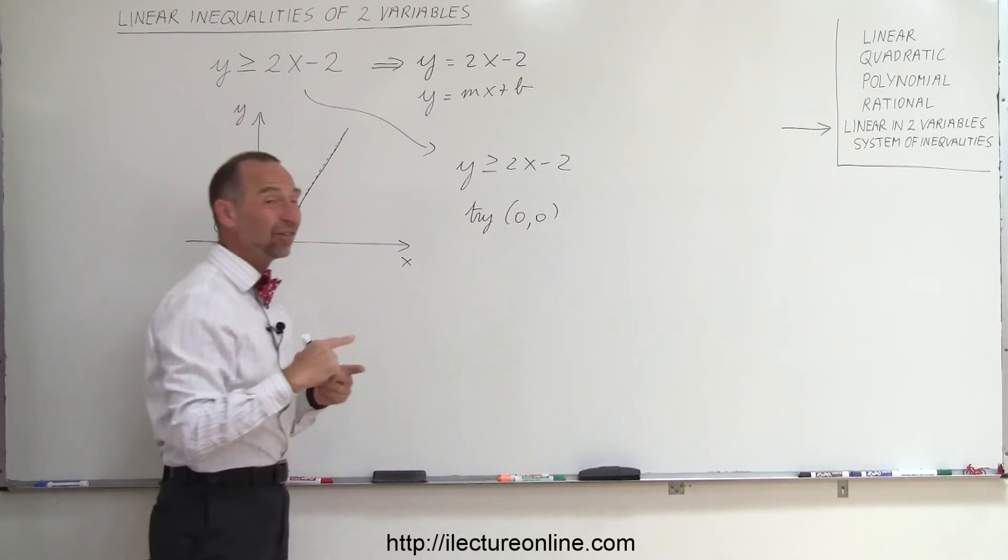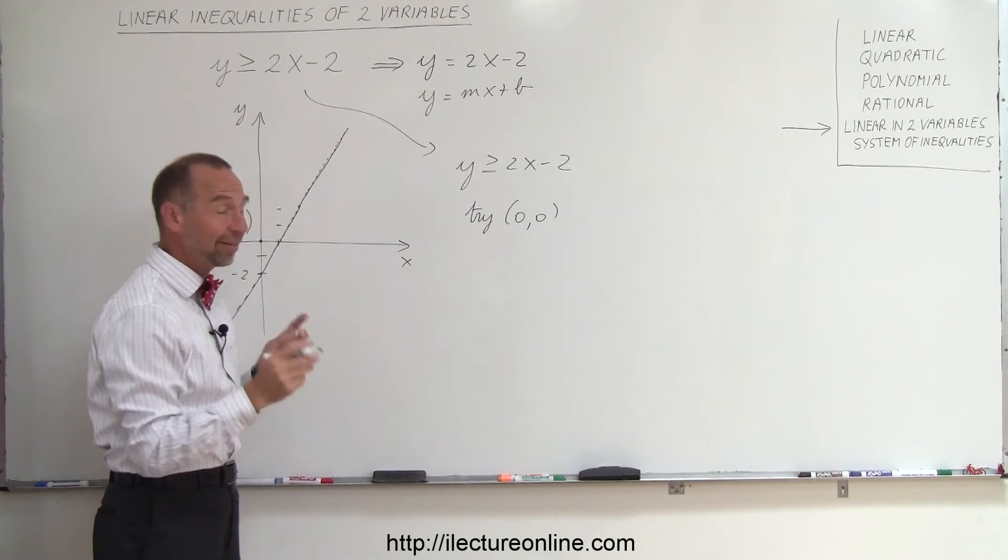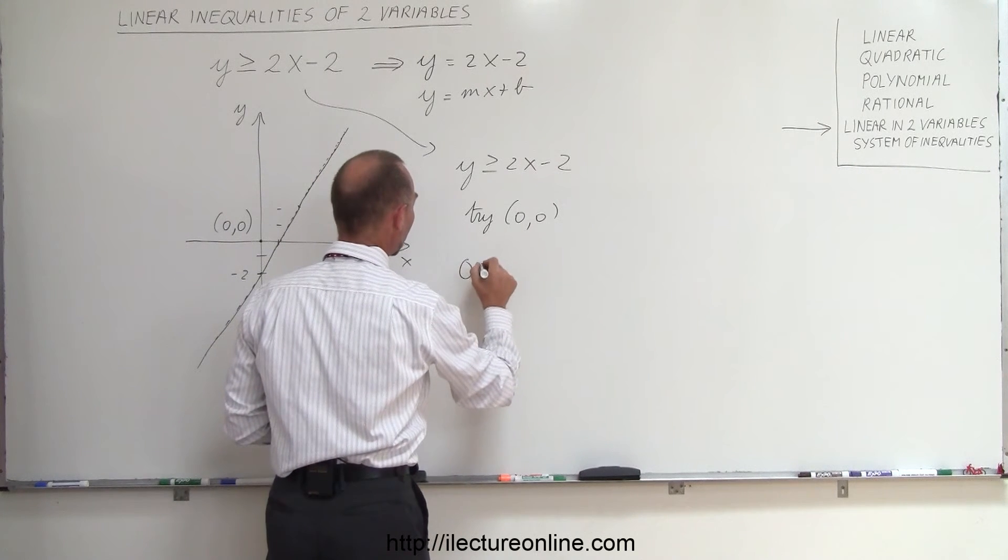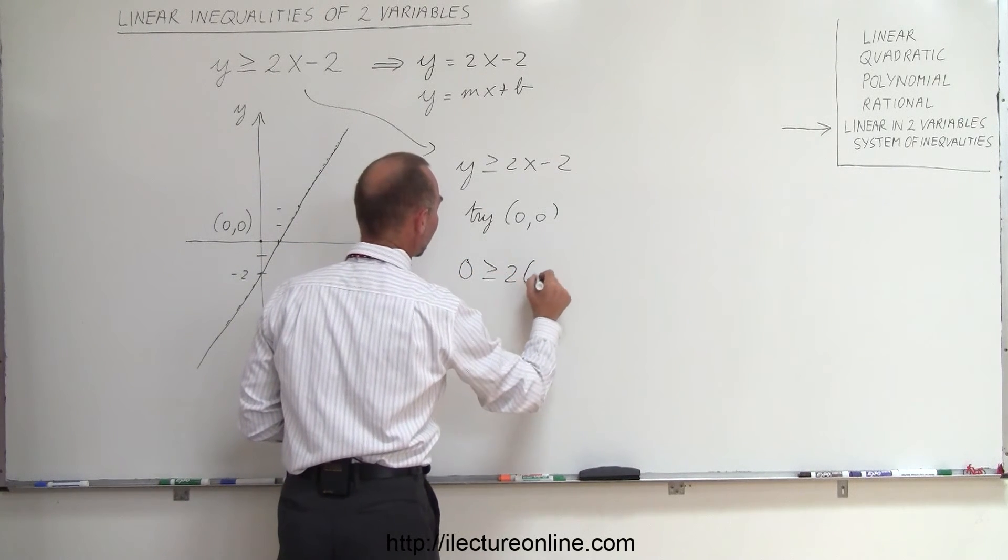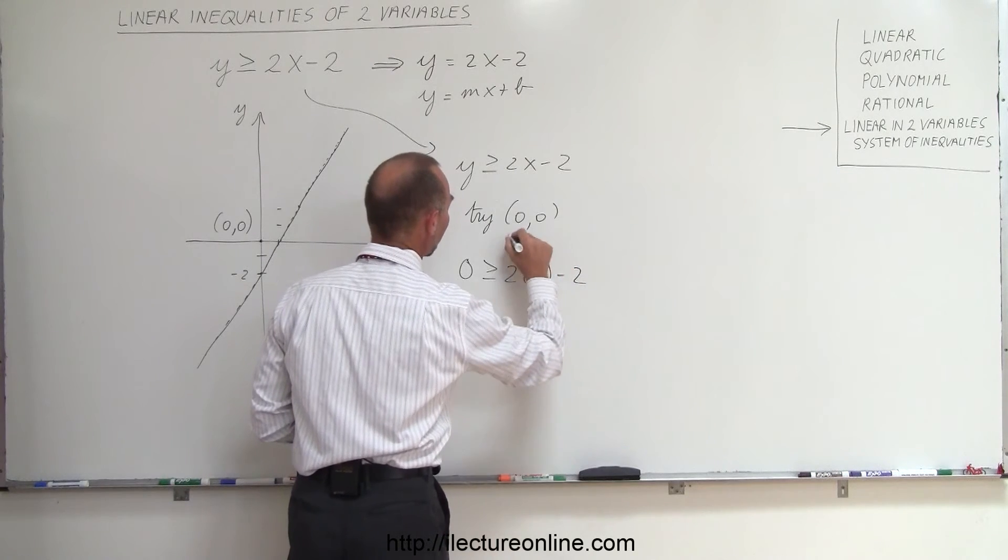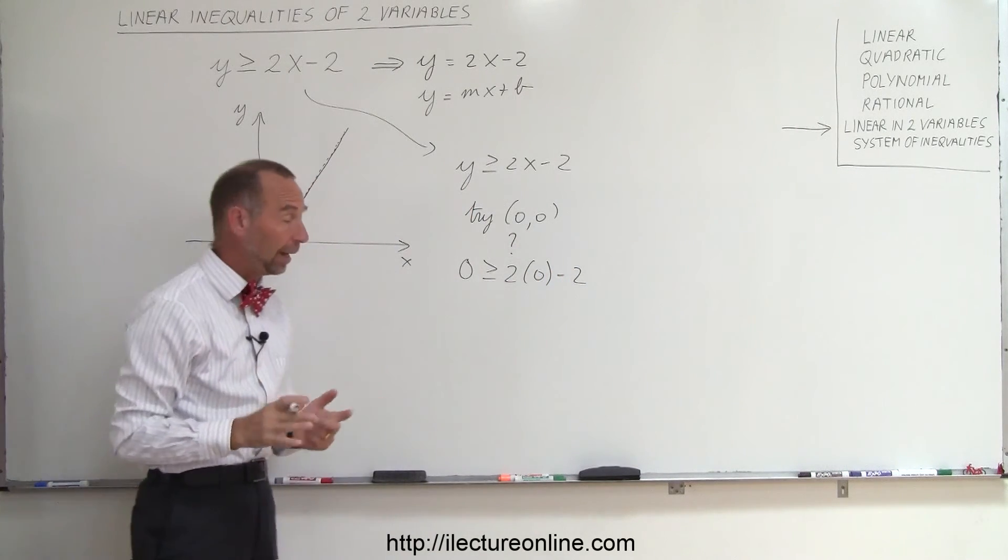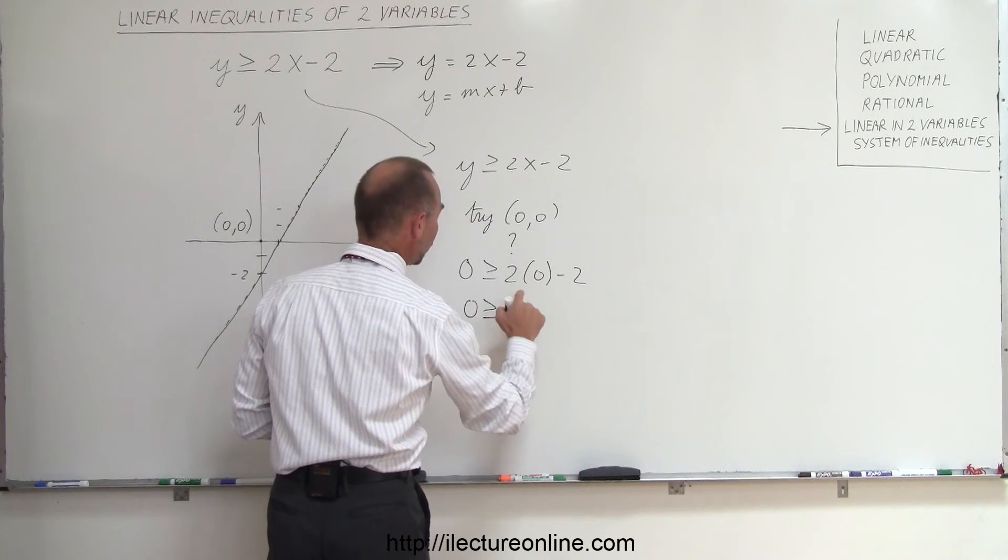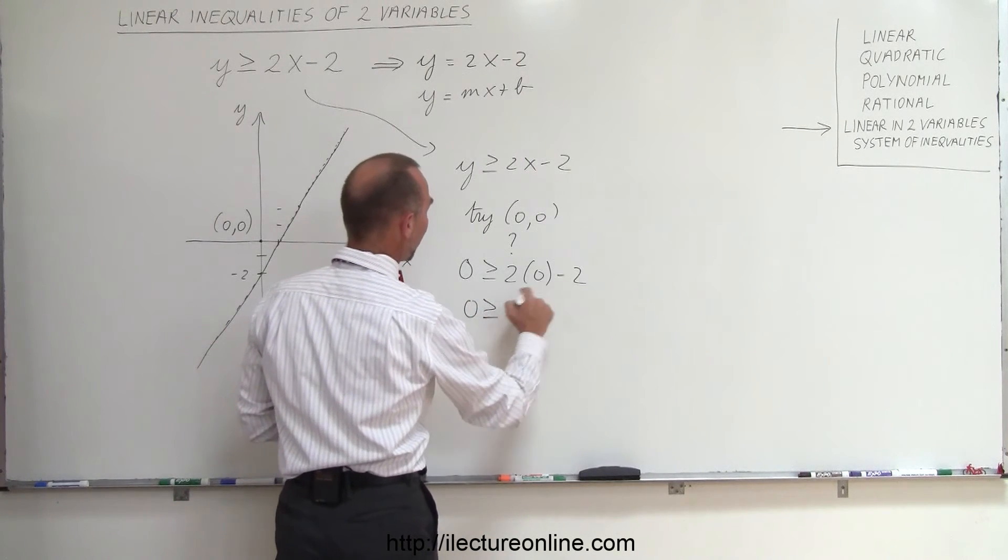So what we're going to do here is take our inequality, so y greater than or equal to 2x minus 2, and we're going to try the point 0, 0. If we do that, let's plug in the 0 for y and the 0 for x and see if that satisfies that inequality. So 0 greater than or equal to 2 times 0 minus 2 question mark, because we don't know if it will or not, and then we simplify that. So we have 0 greater than or equal to, 2 times 0 of course is 0, minus 2.